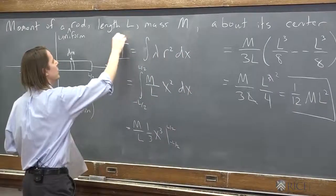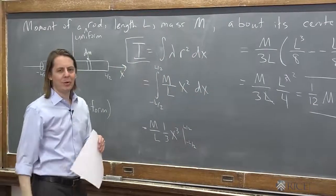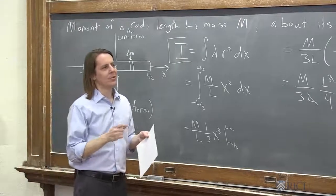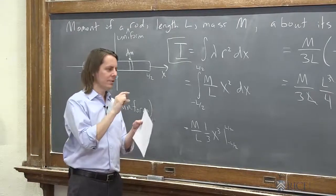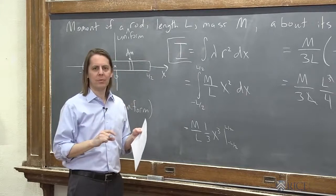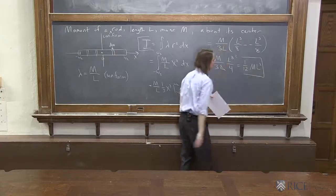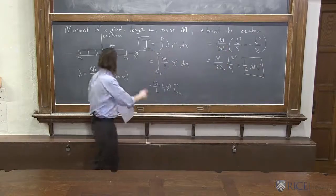And a quick check you can do on these is, remember, a moment of inertia, if you go back to your original definition, it's always a mass times, it's always kilograms times meters squared. So you should make sure that all the canceling you did ended up with a mass and a distance squared.